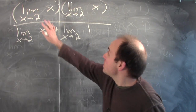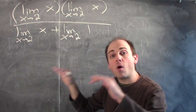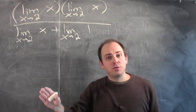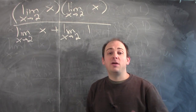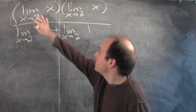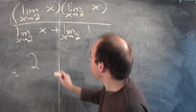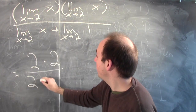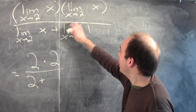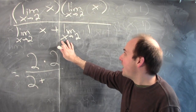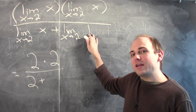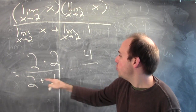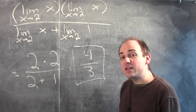So I've got the limit of x times the limit of x, over the limit of x plus the limit of 1, all as x approaches 2. What's the limit of x as x goes to 2? That's asking: what can you guarantee x is close to if x is close enough to 2? The answer is 2. So the limit of x as x goes to 2 is 2. The limit of 1 as x approaches 2 is just 1, since the limit of a constant is that constant. So I get 2 times 2 over 2 plus 1, which is 4 over 3.